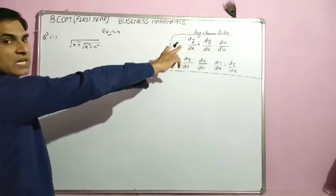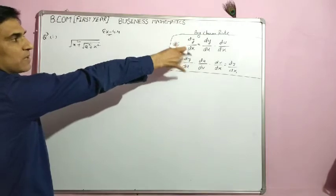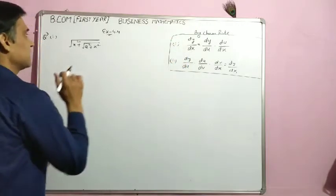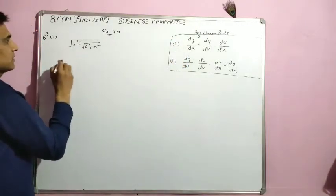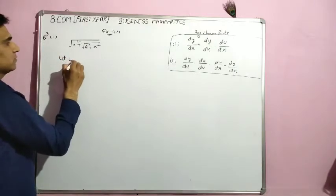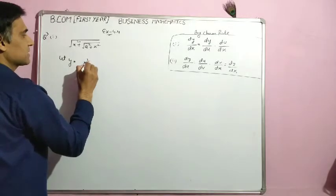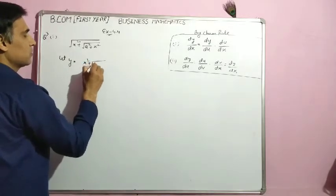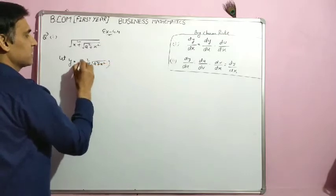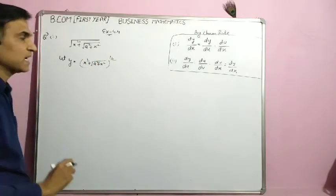If a composite function is given, we have two formulas — chain rules. Let y = (x² + √(a² + x²)) raised to the power 1/2. We replaced the square root with the power 1/2.